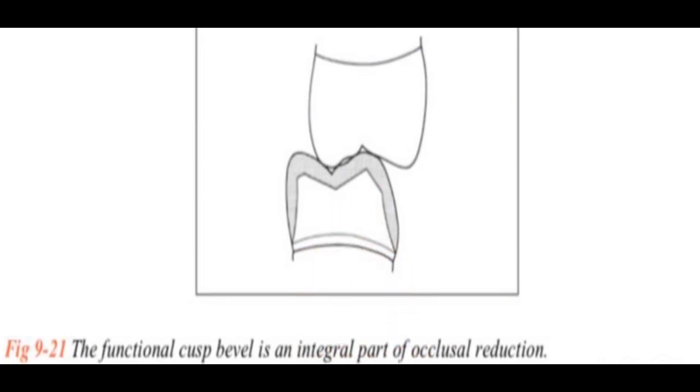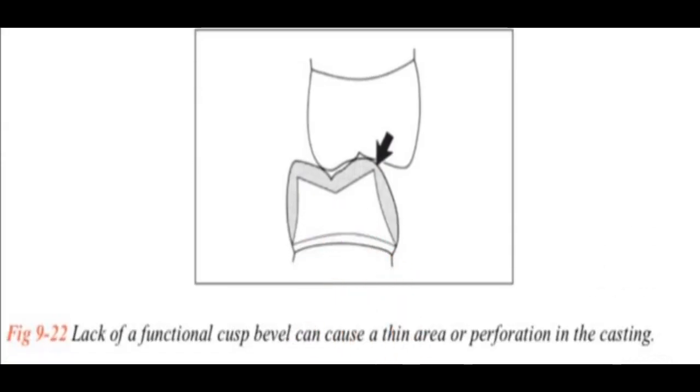Looking at the figure you can appreciate the functional cusp bevel. You can see an incline toward the buccal cusp and how well the occlusion is after creating a functional cusp bevel. Now look at this picture where a functional cusp bevel is not made. It will lead to several problems and the cast will be extremely thin in the area overlying the junction between the occlusal and the axial reduction, and it will lead to perforation.